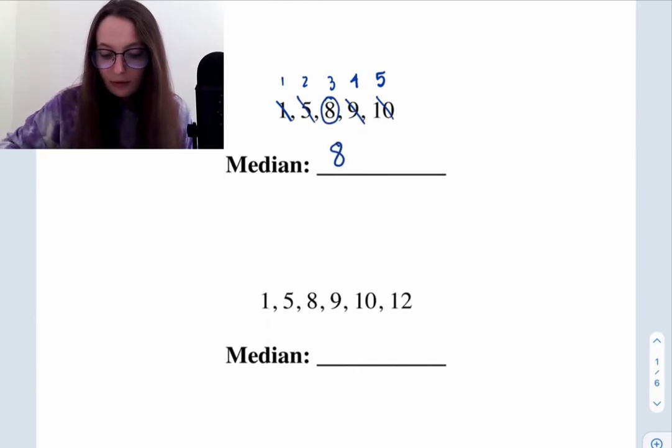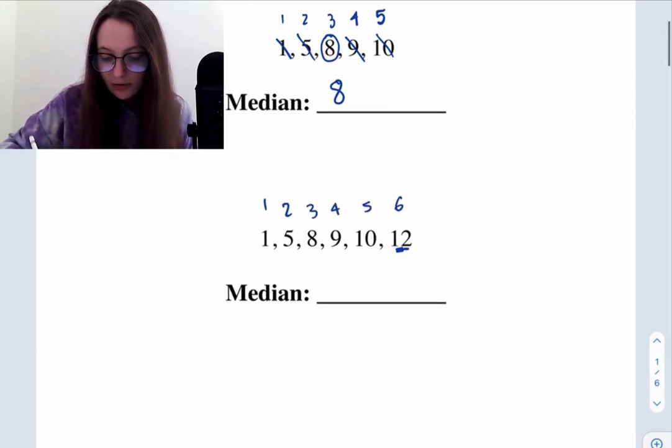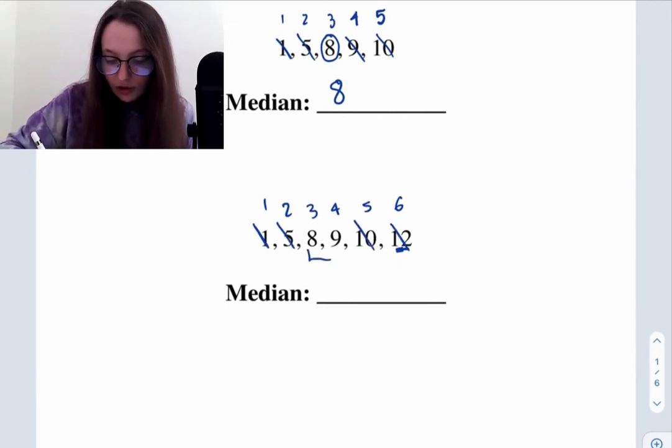For the one below that, we can see that we have added in the term 12, so there are six terms. This is an even number of terms. We cross out numbers on both sides, but we're left with two in the middle. So we take the average of these two. Eight plus nine over two gives us 8.5 as the median.